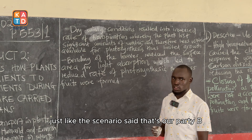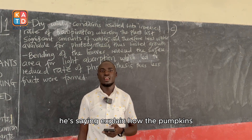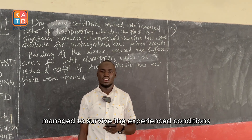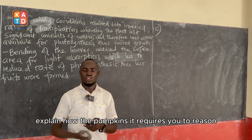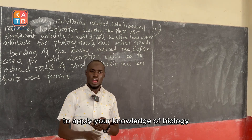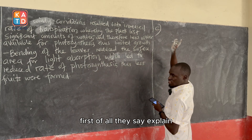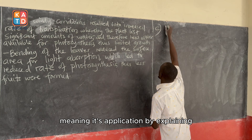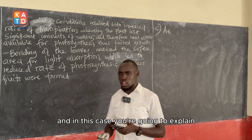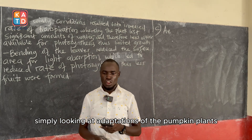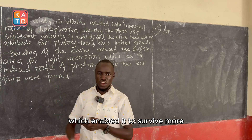That's our Part B. For Part C, it says: explain how the pumpkins managed to survive the experienced conditions. This question requires you to apply your knowledge of biology. They say explain, meaning it is application by explaining. You are going to explain by looking at the adaptations of the pumpkin plants to the conditions experienced, which enabled them to survive.